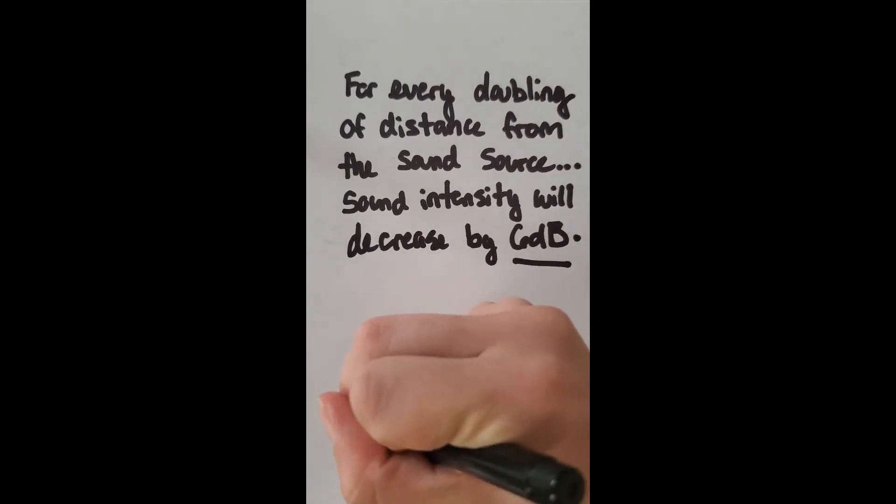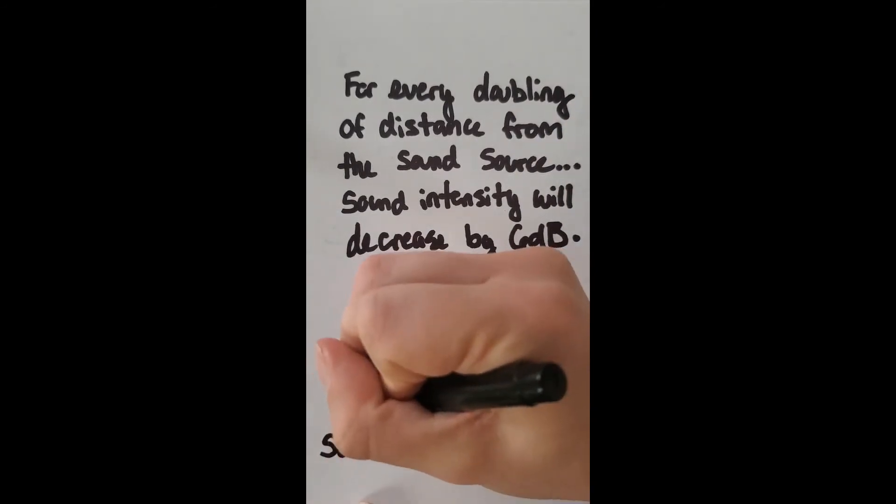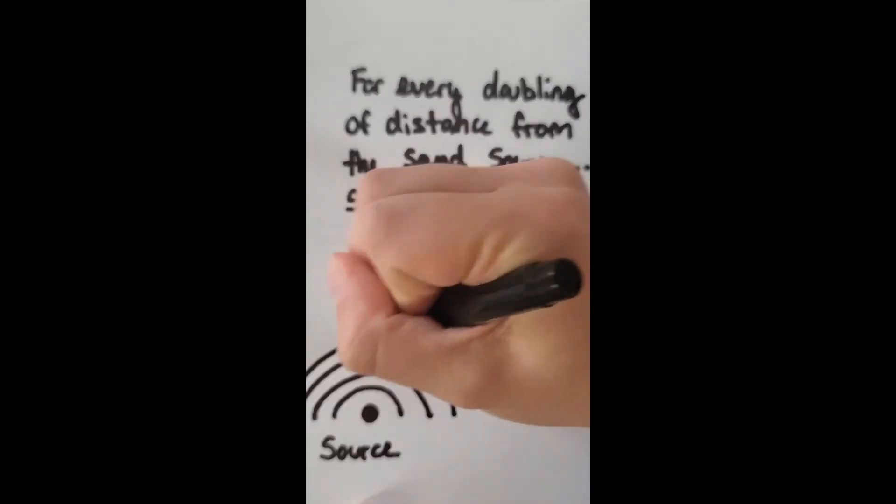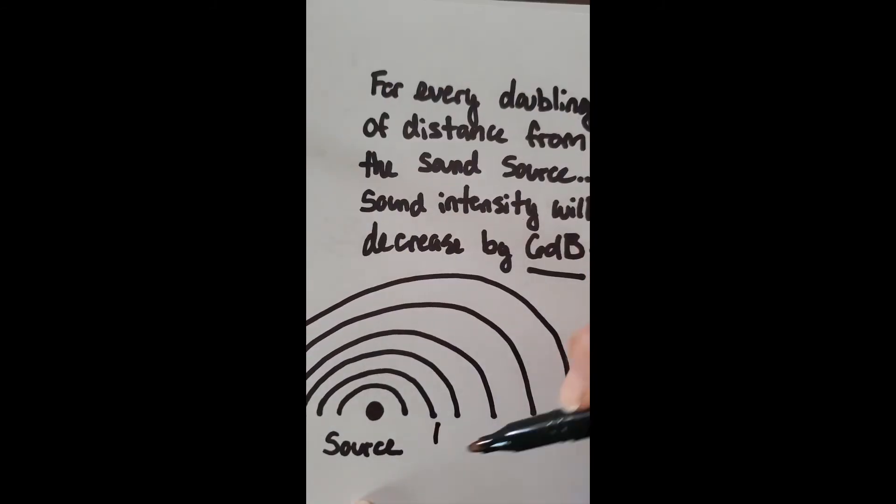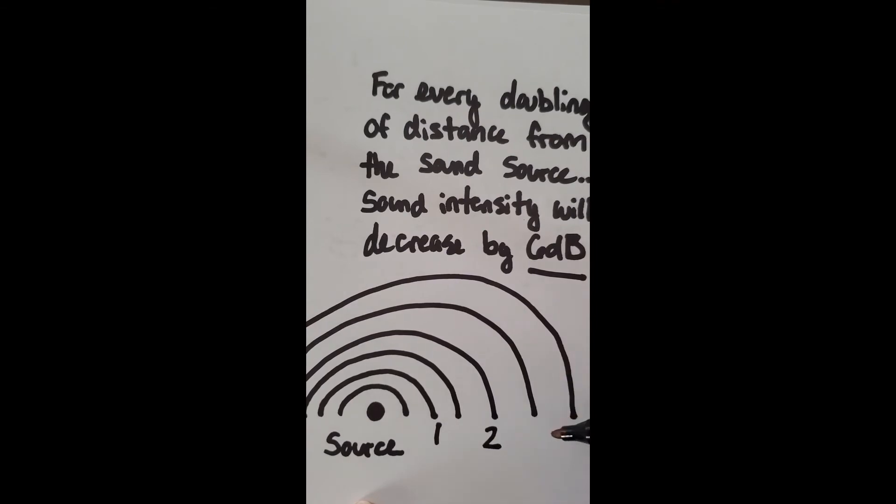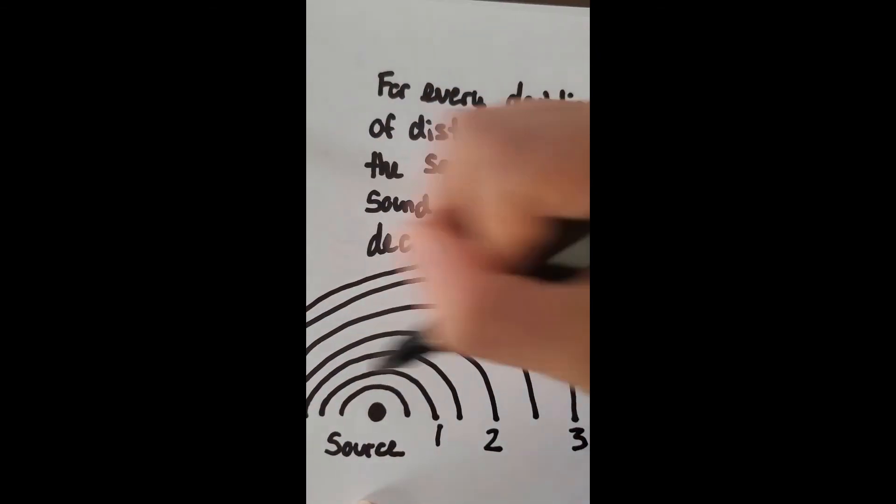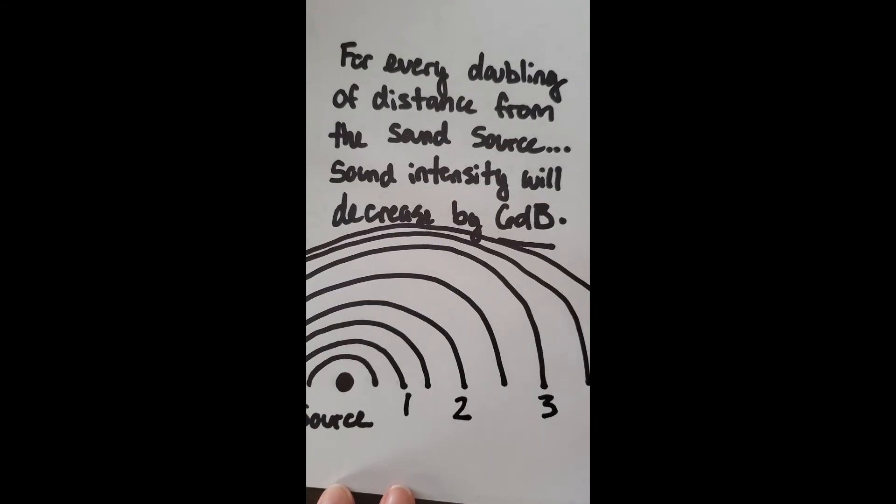For example, in an open air space, each doubling of distance away from the sound source would subtract six, starting at the source of 96 decibels, dropping to 90, then down to 84, and so on.